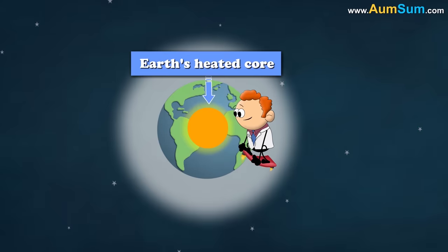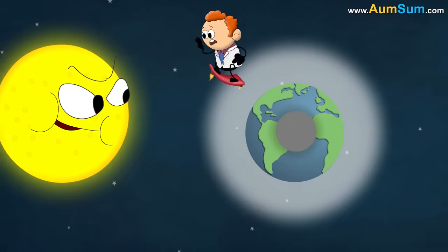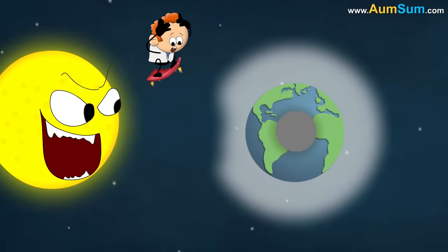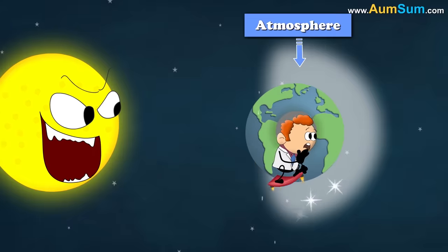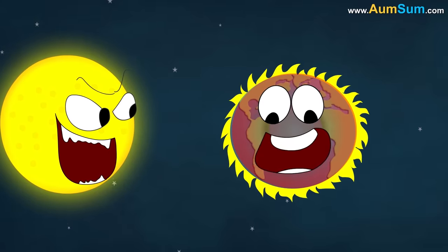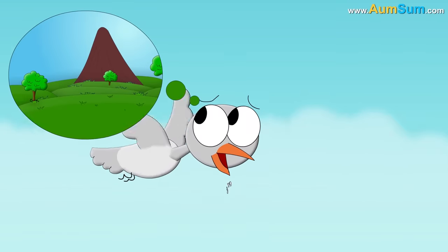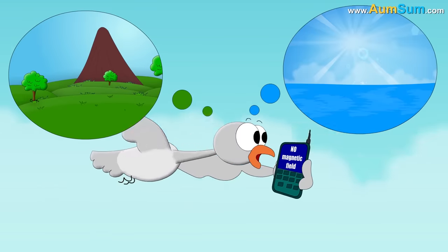Scientists believe that Earth's heated core plays an important role in the creation of its magnetic field. With no magnetic field, the following things will occur. Our atmosphere will slowly but surely disappear as there will be no protection from harmful solar winds. Also, migratory birds would have a very hard time finding their destination.